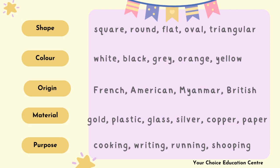For shape adjectives: square, round, flat, oval, triangular. For color: white, black, grey, orange, yellow. For origin: French, American, Myanmar, British. For material: gold, plastic, glass, silver, copper, paper. For purpose: cooking, writing, running, shopping.